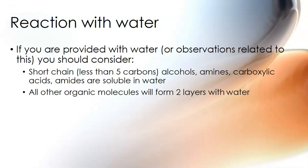Pretty much all other organic compounds — haloalkanes, alkanes, alkenes, alkynes — they all form two layers because they are immiscible; they don't dissolve in water. Haloalkanes sink, but they all form two layers. So solubility can be a really quick way to distinguish between compounds.